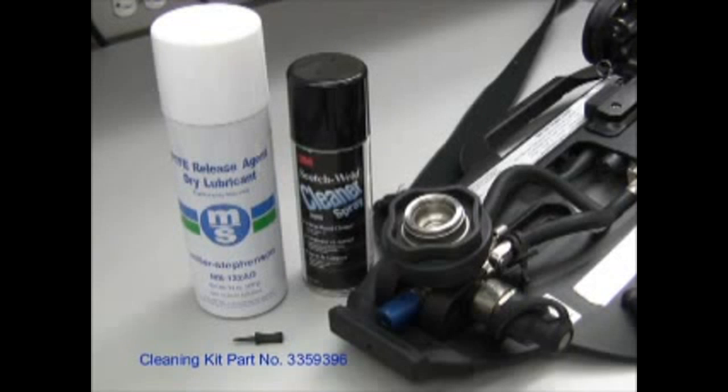When needed, the quick cylinder connector system will require cleaning and lubricating using the following cleaning kit. The cleaning kit consists of 3M citrus cleaning spray, dry lubricant MS122AD and blanking plugs. The part number for the cleaning kit is 3359396.